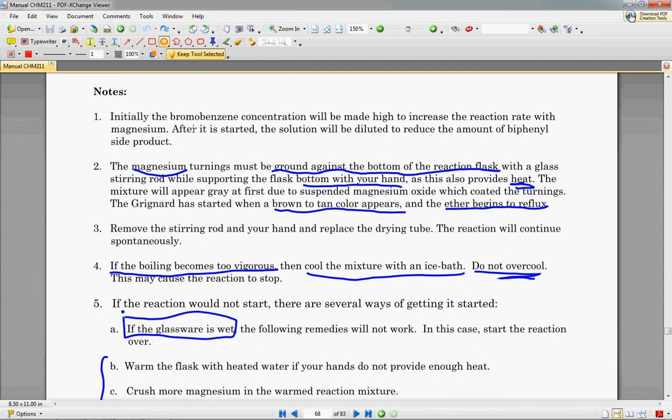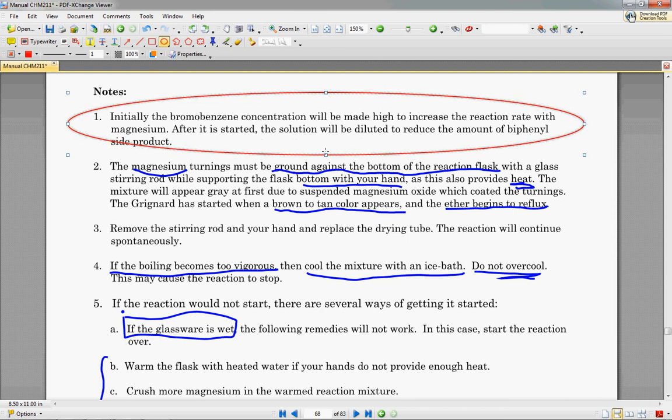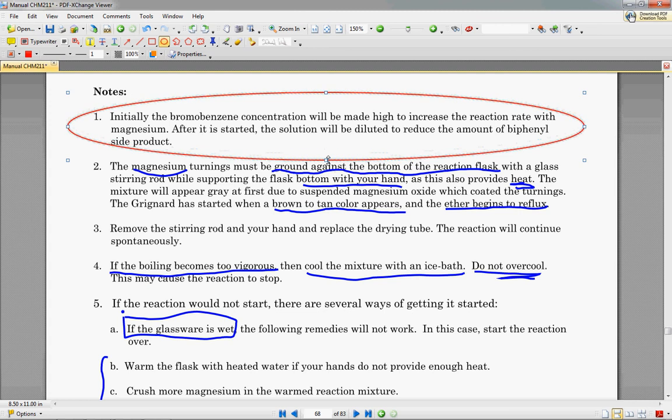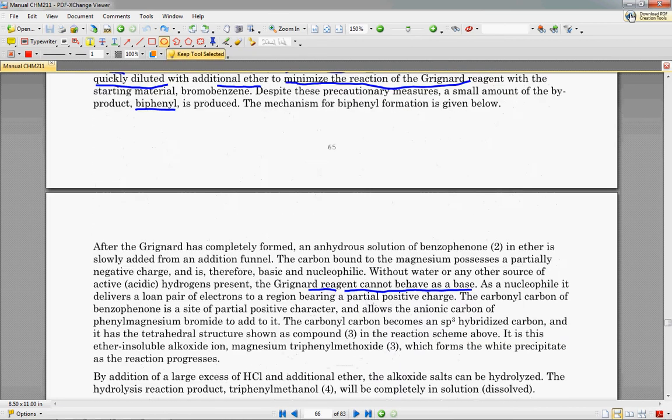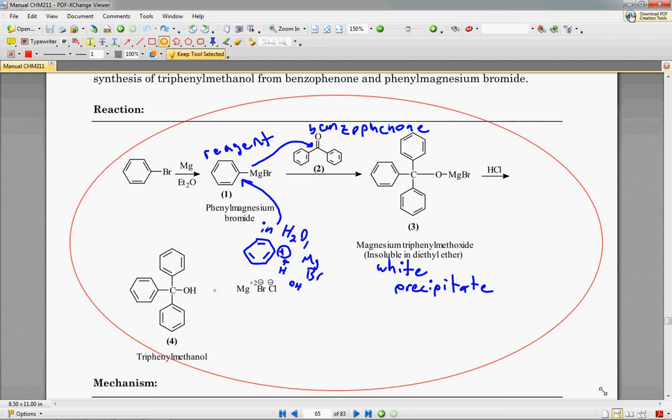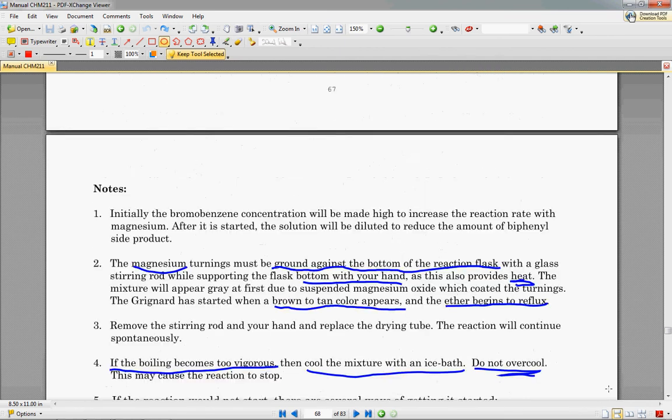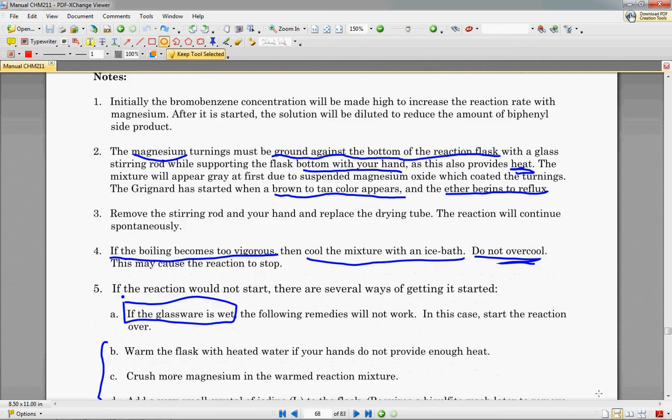There are some extra notes that we need to read over. So, initially, our bromobenzene concentration will be made high to increase the reaction rate with magnesium. However, after it's started, the solution will be diluted to reduce the amount of biphenyl side products. So, if we remember the biphenyl from up here, we don't want this guy to form, because then we can't follow this nice reaction that we were given on the first page. So, that's why, as soon as that reaction starts, you want to add additional ether in order to essentially reduce the amount of biphenyl created.